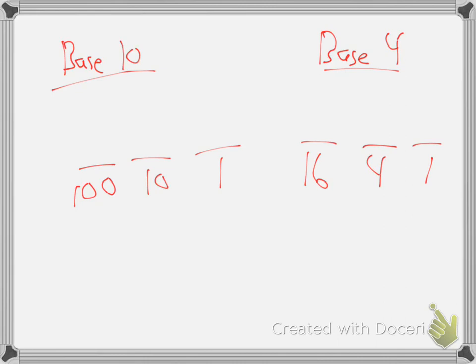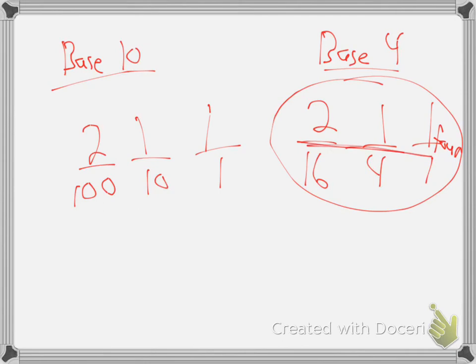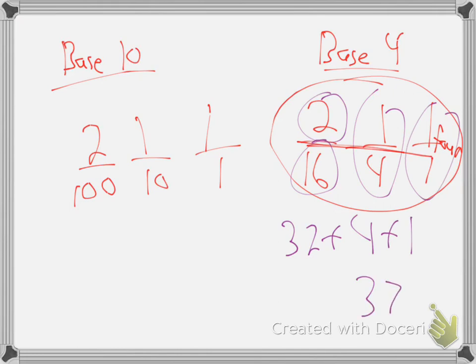So, for example, if somebody gives me the number 2, 1, 1, and they'll write F-O-R-E down there, let you know it's not a normal number. It's a base 4 number. If they wrote 211 over here, we would say 211. But in base 4, this is not the same, is it? What is it? How do you figure out what that is? It's 2 16s, 32. And 1 4, and 1 1, it's what? 37. That's 37.